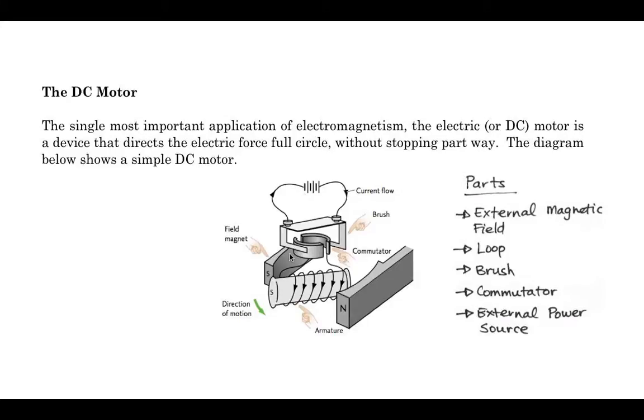So this in here, this brush and commutator system is a very fancy way of making sure that we don't get these wires in here. Because if we're going to send current through this coil, these wires need to be connected.